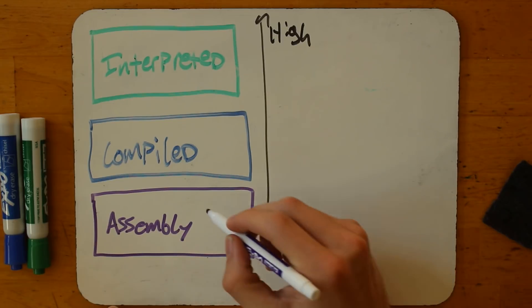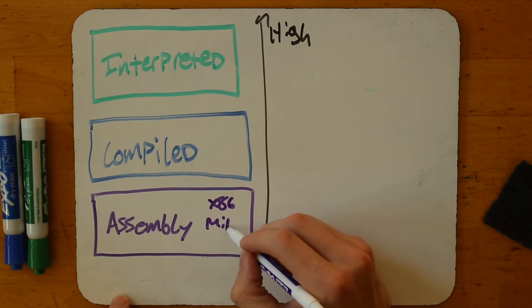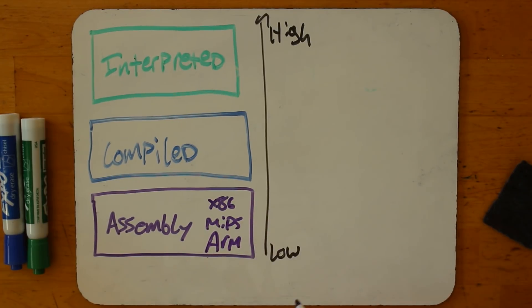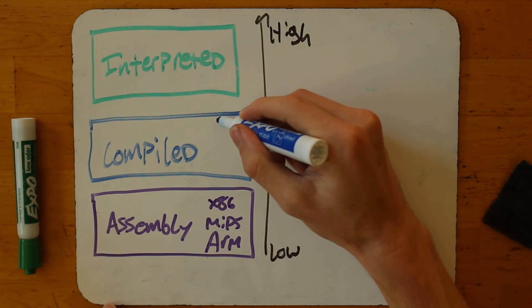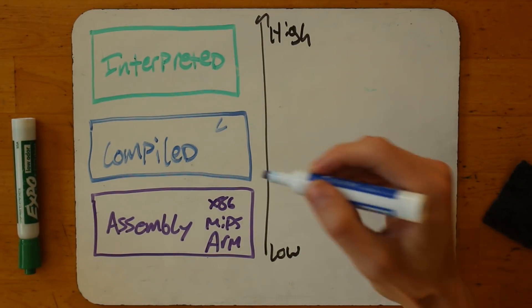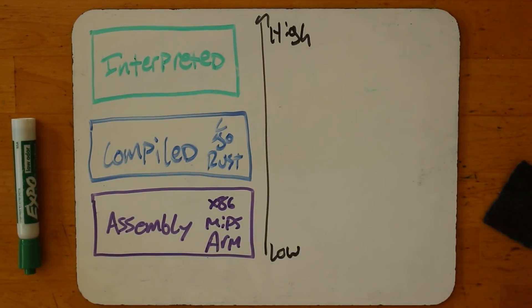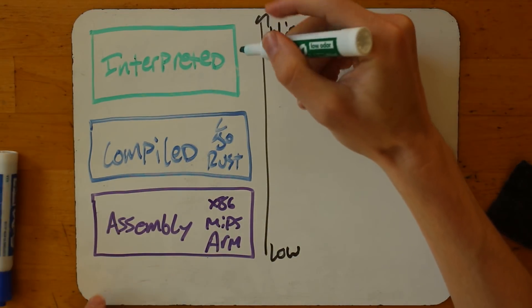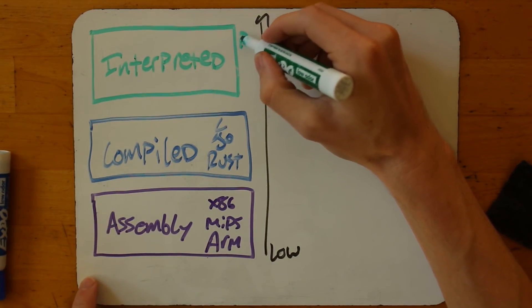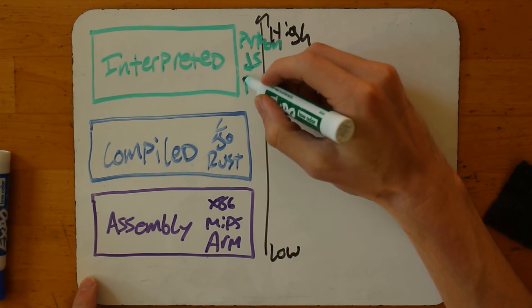Assembly languages — you might have heard of x86, MIPS, or ARM. These are three different assembly languages. In the compiled languages bucket we have C, C++, Go (a newer compiled language), and Rust. And then way up here at the highest level, these are becoming very popular: Python, JavaScript, and Ruby.